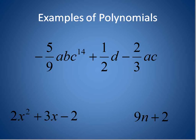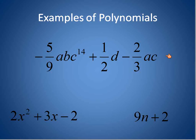Going back to our original definition: a polynomial is a series of monomials joined together with addition or subtraction. Here is an example — a really funky example with fraction coefficients — but our variables all fit: whole number exponents. This is an example of a polynomial. A more standard polynomial that you'll see would be something like 9n plus 2, or 2x squared plus 3x minus 2. You typically won't see as many fractions, but you can. That is an example of a polynomial.